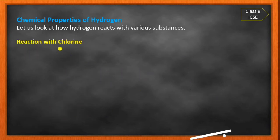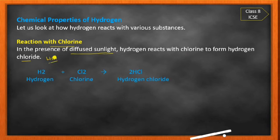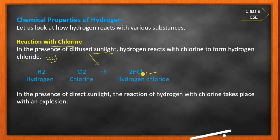Now the reaction with chlorine. In the presence of diffused sunlight — not direct sunlight — hydrogen reacts with chlorine to form hydrogen chloride (HCl). If direct sunlight is used instead of diffused sunlight, the reaction of hydrogen and chlorine takes place with an explosion. That is the key difference between the two conditions.